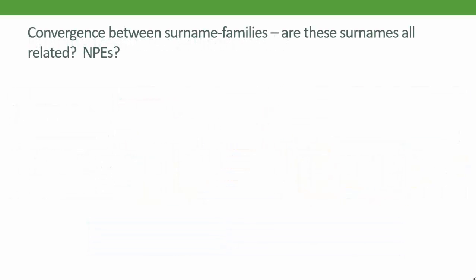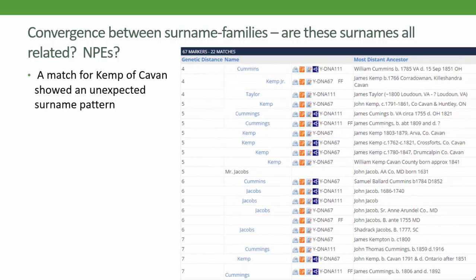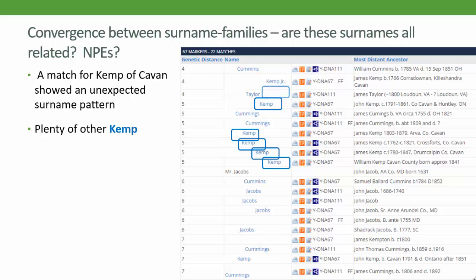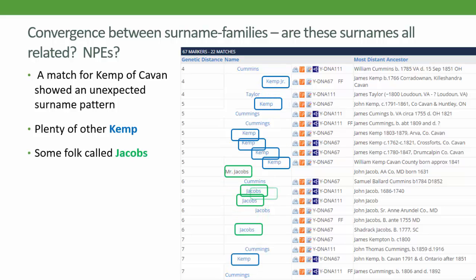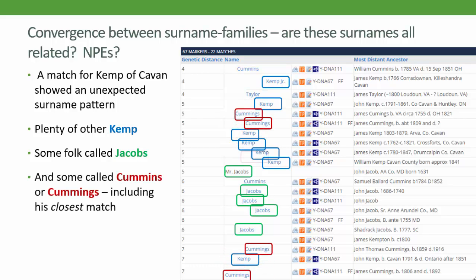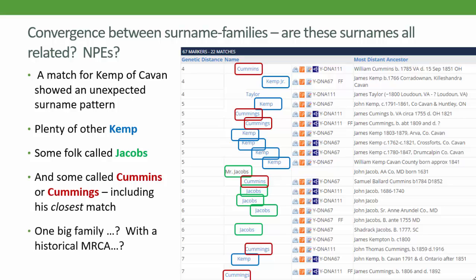Signs of convergence can also appear in matching lists for you or your project members. This is a matches list from a member of the Kemp family from Cavan. While we see lots of Kemps, there are also several people named Jacobs in the mix, and a number named Cummings or Cummins spread around the matches, including Mr. Kemp's closest match, ahead of all the other Kemps. So what's going on here? Are these all one genetic family? Have there been some later surname changes or NPEs? Or are these three separate surname lineages which have converged onto each other but do not share a common ancestor since the adoption of surnames? STRs cannot really answer these questions — they can give us some clues, but no definitive answer.